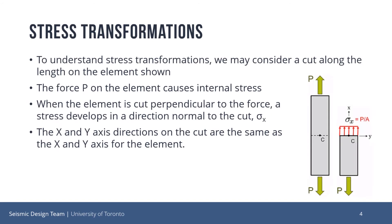Before we dive into the application of Mohr's Circle to understand how to calculate stress transformations, we must first understand what a stress transformation is. To understand stress transformations, we may consider a cut along the length of the element shown. The force P on the element acts parallel to the x-axis and causes internal stress. When we make a cut on an element perpendicular to this force, a normal stress will develop, denoted by sigma x as it is parallel to the x-axis. The x and y-axis directions on the cut are the same as the x and y-axis for the element, since we made our cut perpendicular to the force.